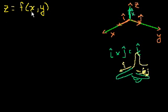z is equal to a function of x and y. And all that means is that if I give you an x value and a y value, you get a z value. And so let's pick one. z is equal to x plus y. So z is equal to x squared plus y.